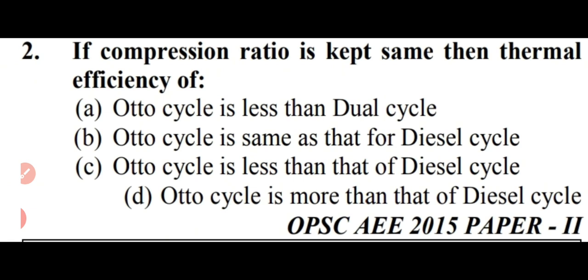If compression ratio is kept the same, the thermal efficiency of — the right answer is option D — the Otto cycle is more than that of the diesel cycle. For same compression ratio and heat addition, efficiency of the Otto cycle will be more than efficiency of dual cycle, and among these two, the efficiency of the dual cycle will be the least.